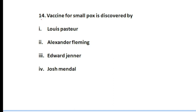Question number fourteen: the vaccine for smallpox was discovered by Edward Jenner in the year 1796. Question number fourteen, option number three, will be the correct answer.